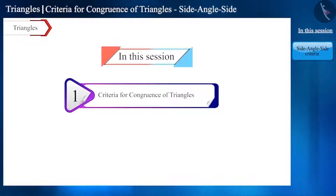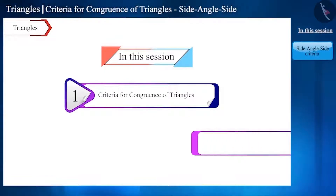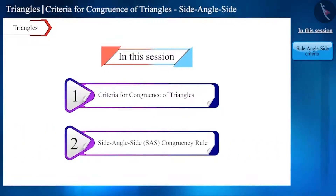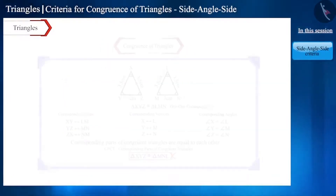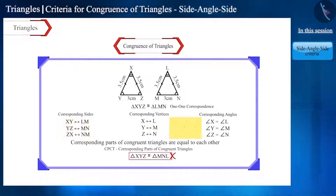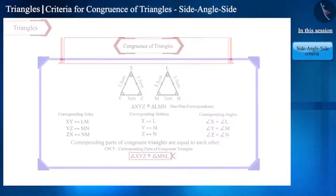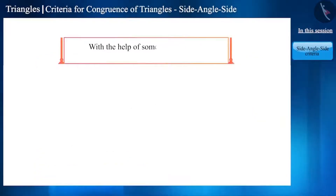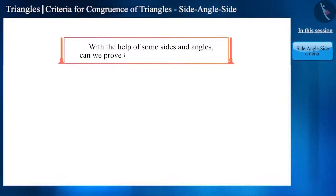The first criterion is side-angle-side. When two triangles are congruent, there is one-to-one correspondence between their sides, angles and vertices. But with the help of some sides and angles, can we prove two triangles to be congruent?